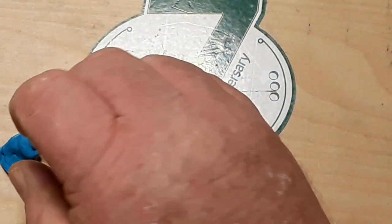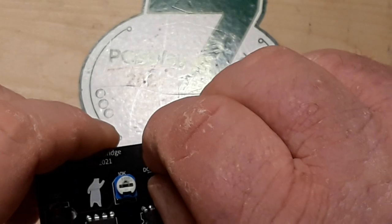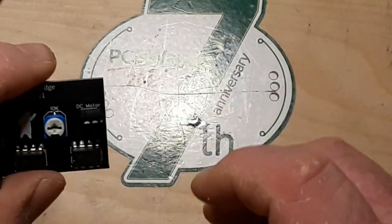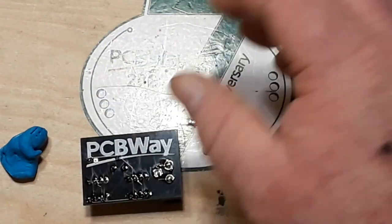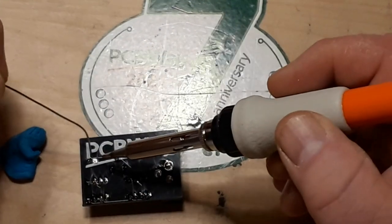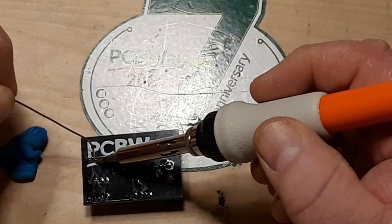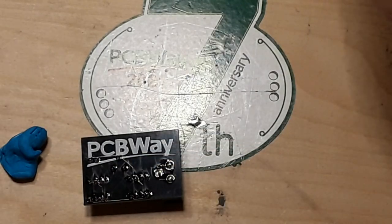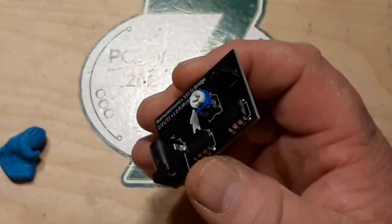I'm just going to solder one pin up real quick. Don't pull off blue tack. Position this thing where we want it. Then we can solder up the other one. So far so good.